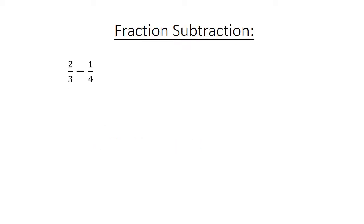Fraction subtraction: 2 over 3 minus 1 over 4. Find the lowest common multiple, 12. 8 over 12 minus 3 over 12 equals 5 over 12.